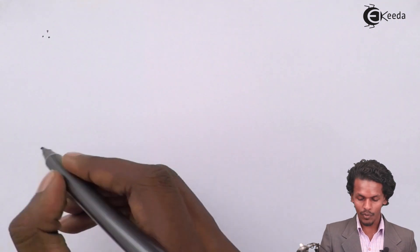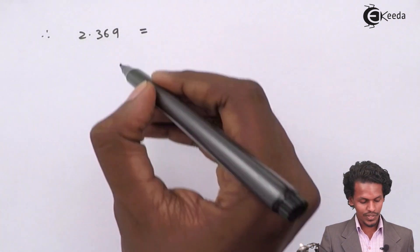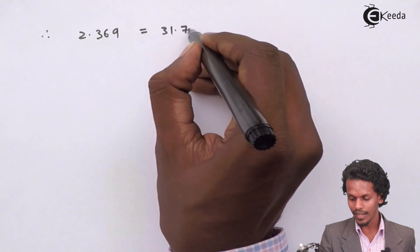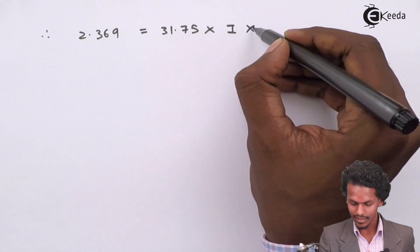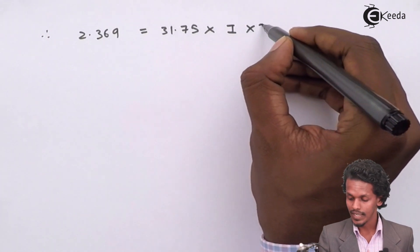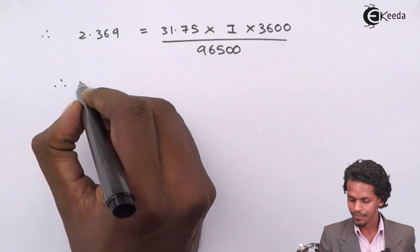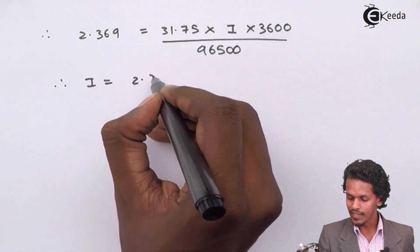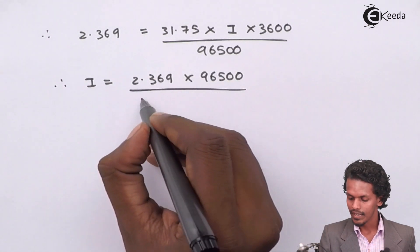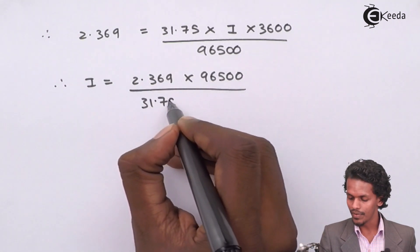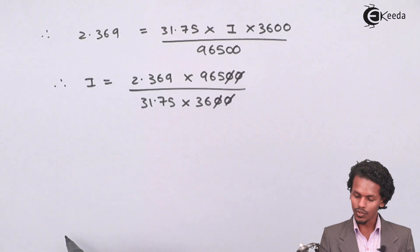Therefore, the W that they have provided is 2.369 gram which equals Z that is 31.75 into current which is being asked into time, and the time is 3600 divided by 96500 coulombs. Therefore I = (2.369 × 96500) / (31.75 × 3600). So if we calculate this thing we get an answer of 2 Amp.